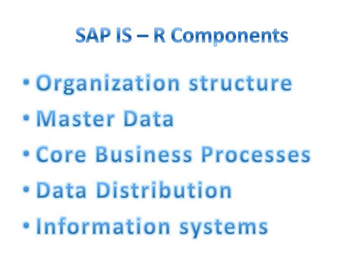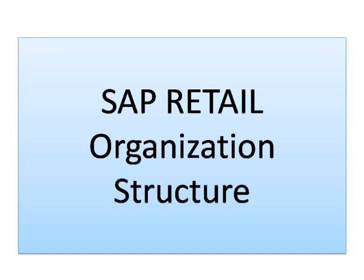SAP IS Retail components can be broadly divided into the following categories: organization structure, master data, core retail business processes, data distribution to external SAP systems such as SAP BI and POS, and a built-in information system — essentially an analytical tool for analysis and business data reporting.